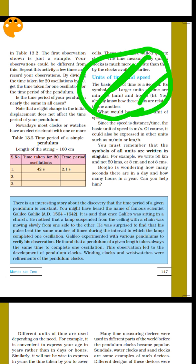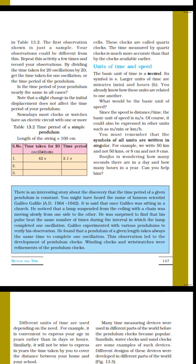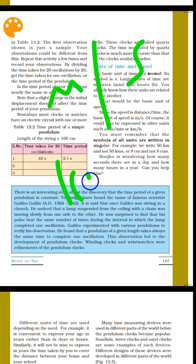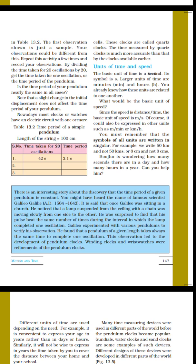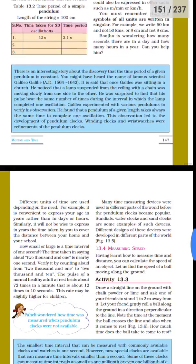One minute has 60 seconds. We use seconds, minutes as units of time. For larger quantities of time, we use larger units, and for smaller time intervals, we use smaller units like milliseconds or microseconds.